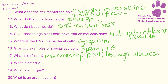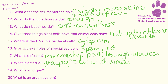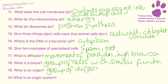A tissue is a group of cells with a similar function. An organ is a group of tissues. And an organ system is made up of lots of different organs.